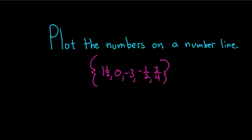Plot the numbers on a number line. So we're given a set of numbers. We know it's a set because we have these set braces here. And the numbers are 1½, 0, negative 3, negative 1½, and ¾.